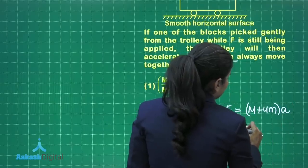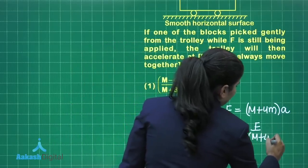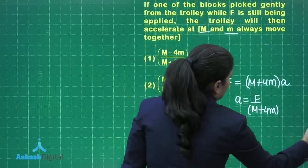This is the acceleration with which the trolley is moving. That can be written as F divided by M plus 4M.